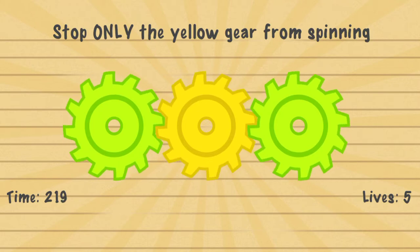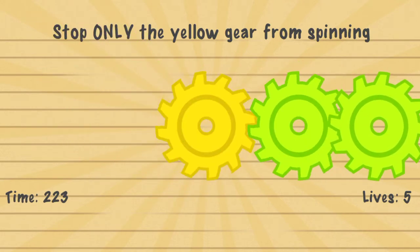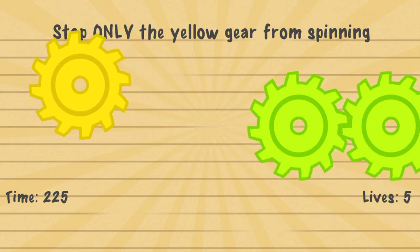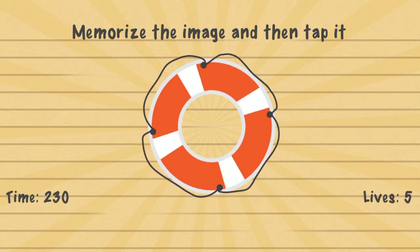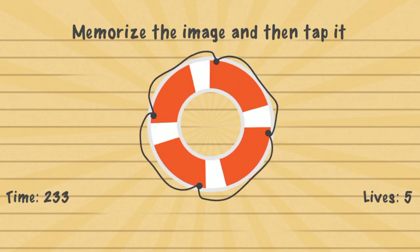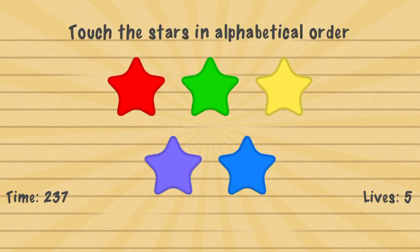Stop only the yellow gear from spinning — you have to take this gear, drag it to the side, and then move this one here. Memorize the image and then tap it. What changed? The words — 'what changed'.